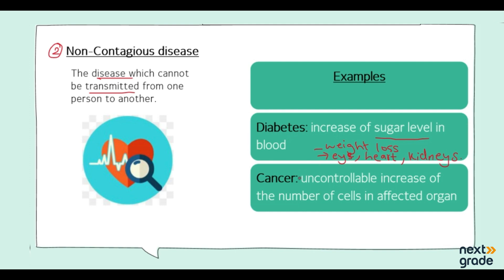Another non-contagious disease is cancer. Cancer can attack any part of the body — for example the liver, stomach, intestine, or blood. In cancer, there is an uncontrollable increase in the number of cells in the affected organs. The abnormal cells may remain confined to a particular organ or may spread throughout the whole body.